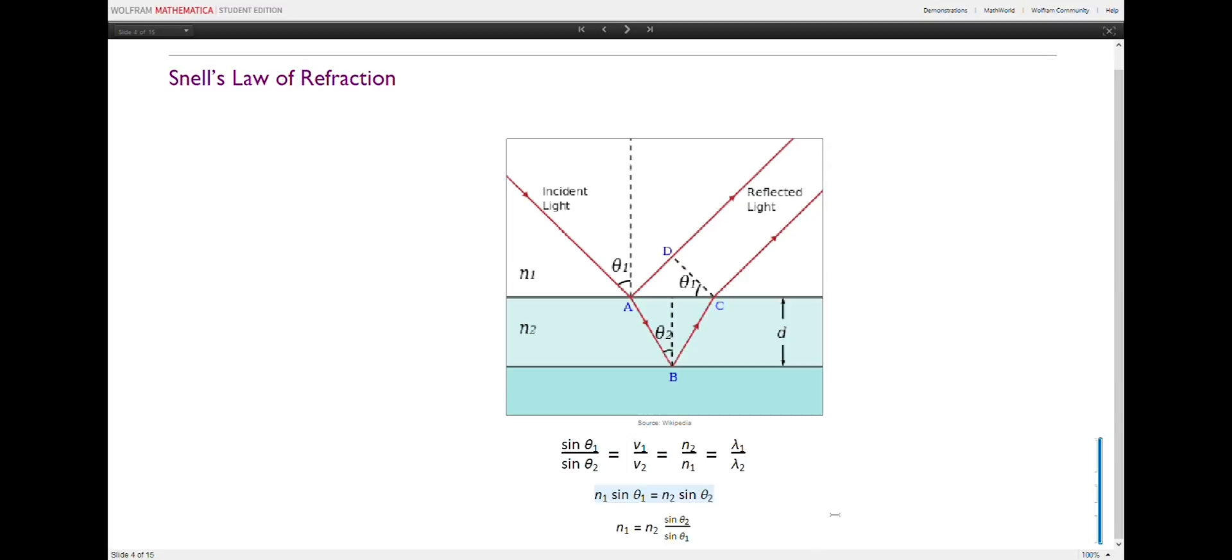Snell's law can be rearranged to represent n1, the refractive index of the first medium, in terms of the incident light angles of the two materials and the refractive index of the thin film. This trick will be useful in some of our later calculations.